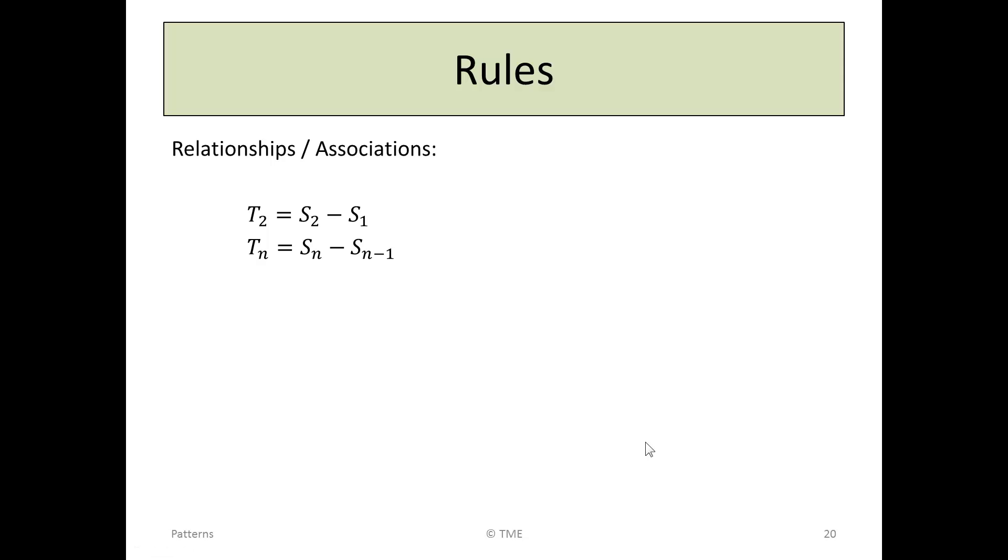Writing those more succinctly, we can see that T2 is S2 minus S1 and Tn is Sn minus Sn minus 1. These are very useful formally and very useful associations. They're not in your tables and they're regularly relied on to answer questions and patterns.